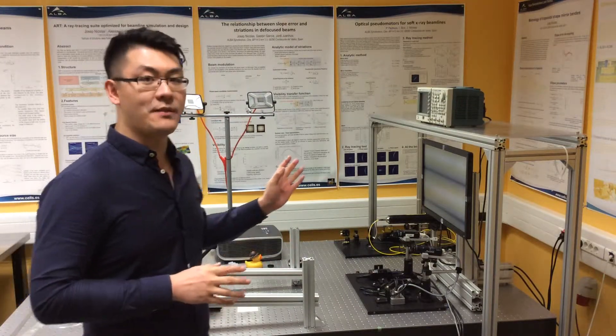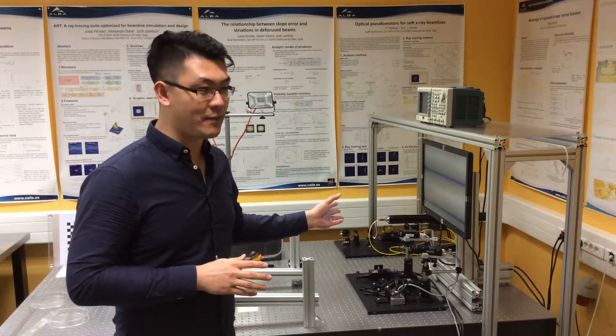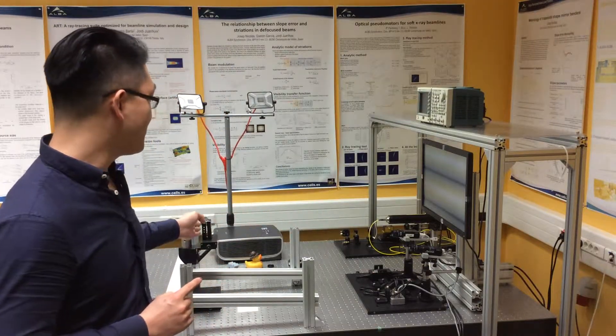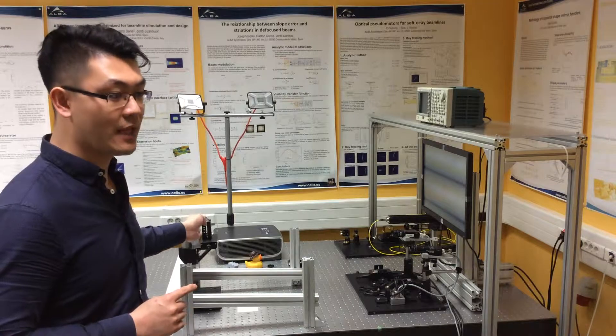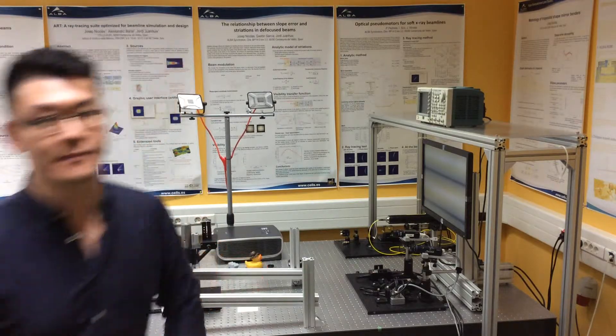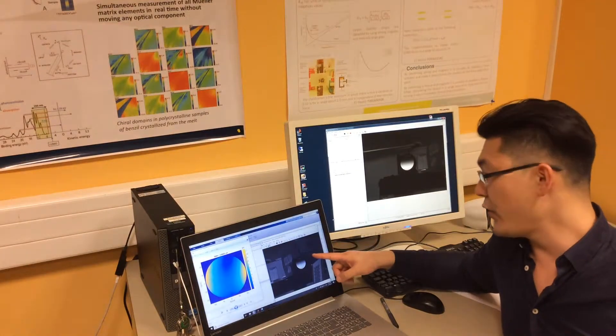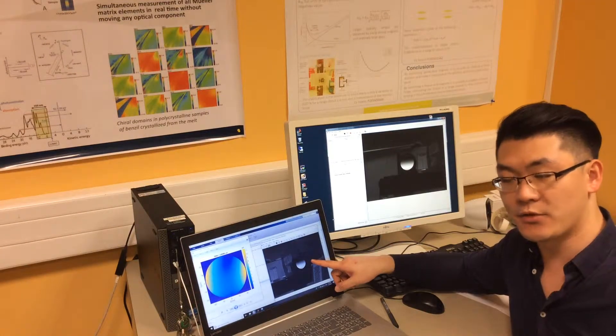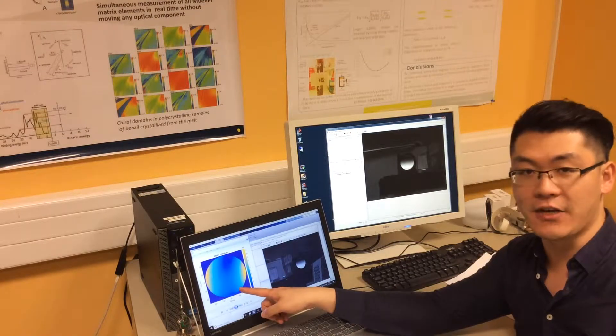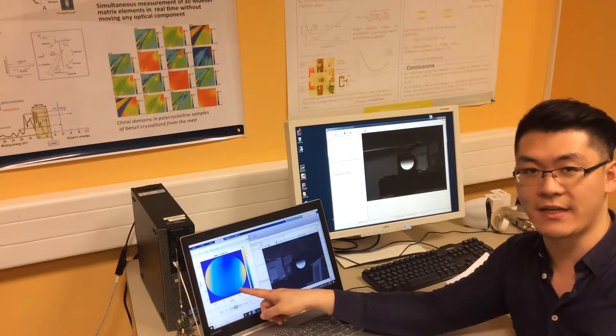So, the system is presented here. And we performed one time the measurement of this mirror. And the result is calculated here. So, here, you can see the fringe pattern reflected by the mirror. And this one is the final surface profile after calculation.